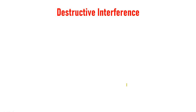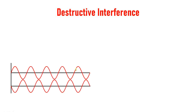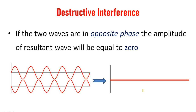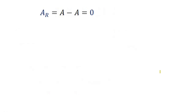Destructive interference. Now we have two waves where the crest of the first wave is aligned with the trough of the second wave. The resultant intensity of the resultant wave is equal to the vector sum of intensities of the individual waves. As it is a vector sum, the result will be 0. If the two waves are in opposite phase, the amplitude of the resultant wave will be equal to A minus A, which equals 0.